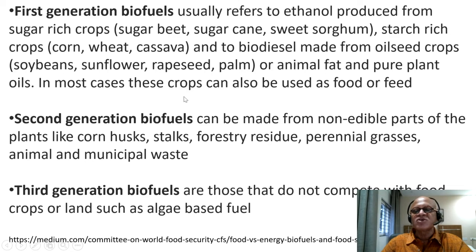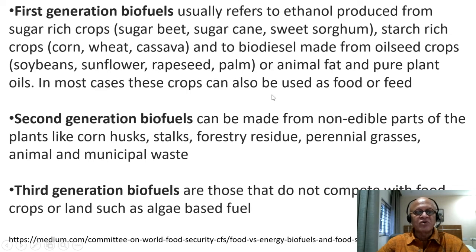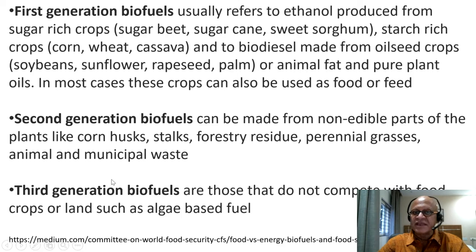In most cases, these crops can also be used as food or feed, which means biofuels are going to compete with food security and food availability. Second-generation biofuels can be made from non-edible parts of plants like corn husks, stalks, forestry residue, perennial grasses, and animal and municipal waste. That would already take away a lot of the competition with food and feed.